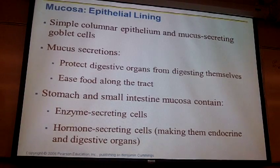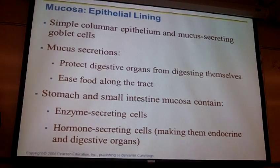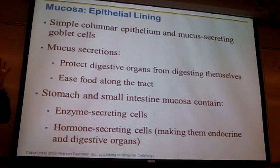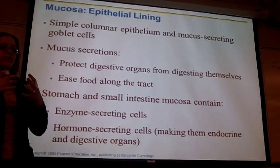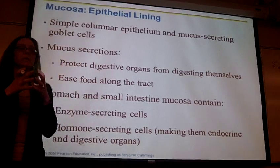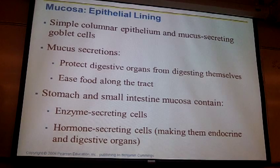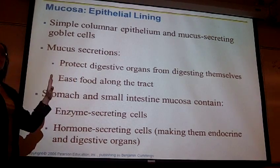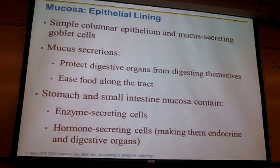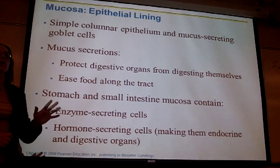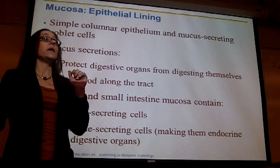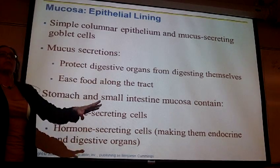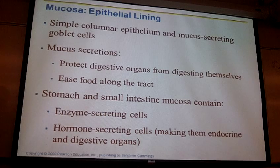The epithelial part of the mucosal tunic is most of the time simple columnar epithelia when looking at the GI tract. There are exceptions: in the esophagus, where you have a big bolus of very rough, abrasive food particles not yet mixed with much liquid, what kind of epithelia would you expect? Stratified squamous — that would be an adaptation. If you see stratified squamous, you might be in the esophagus. You'd also see stratified squamous in the anus. In the stomach, small intestine, and most of the large intestine, it's simple columnar epithelia.